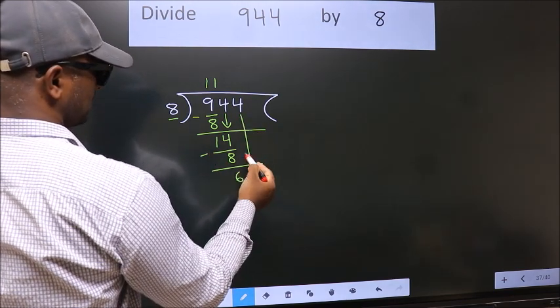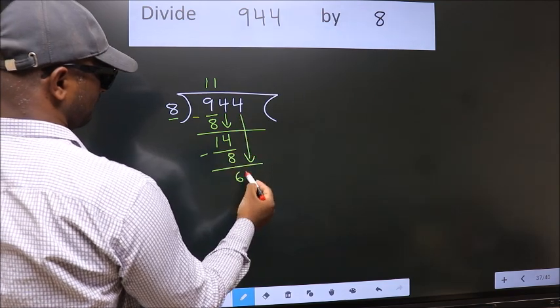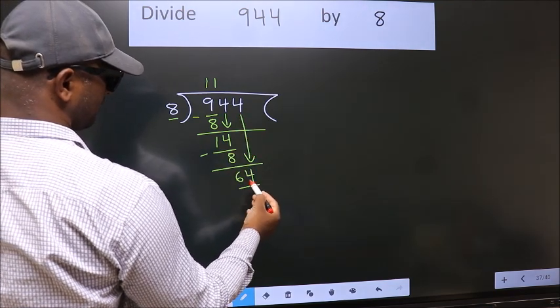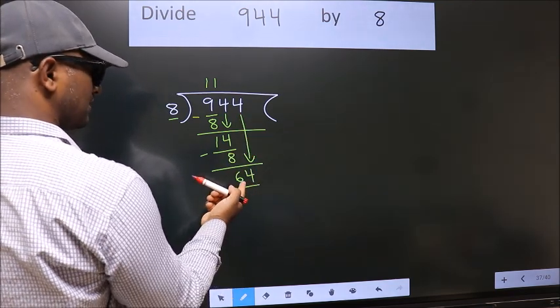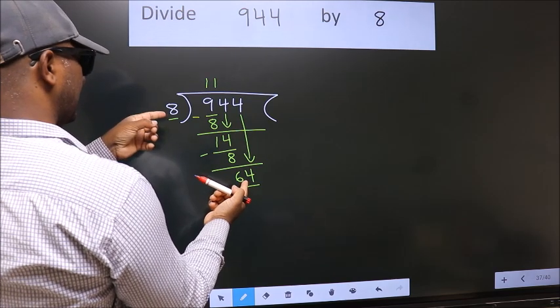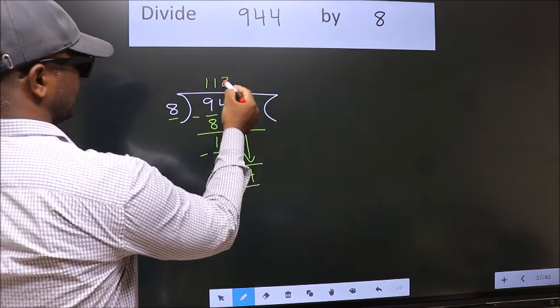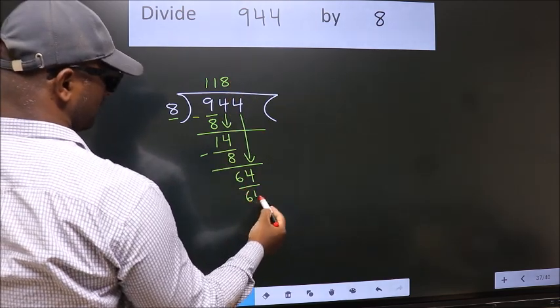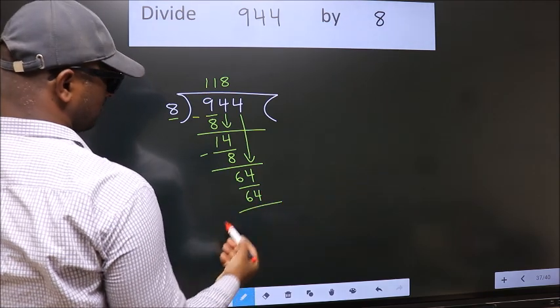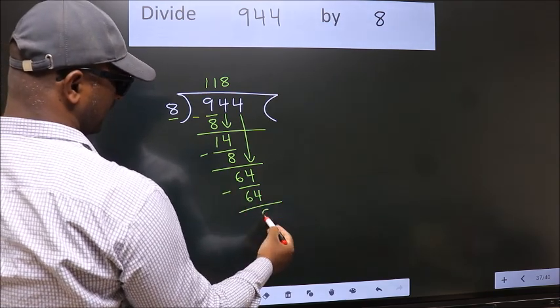After this, bring down the beside number. So, 4 down. So, 64. When do we get 64? In 8 table. 8 8s, 64. Now, we subtract. We get 0.